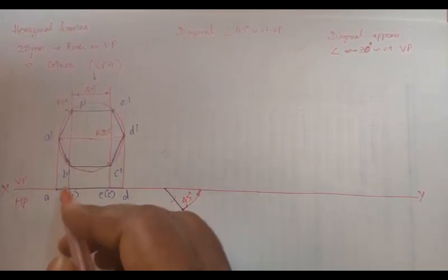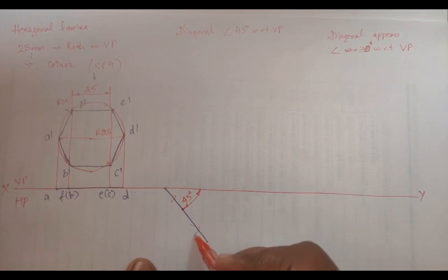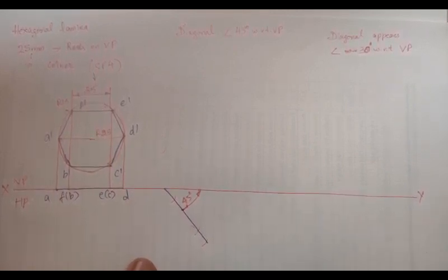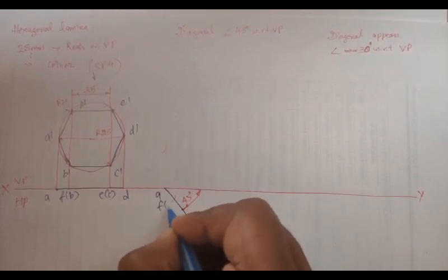And that should be thin line. You are going to rub it after completion of this. This is E, this is C, this is D. Then we are going to do the projections.